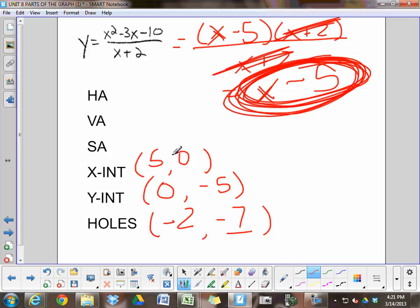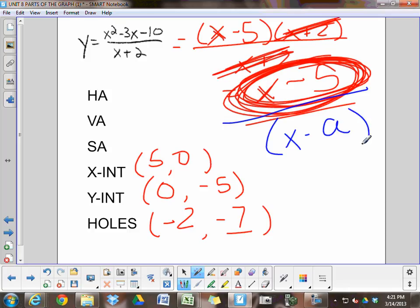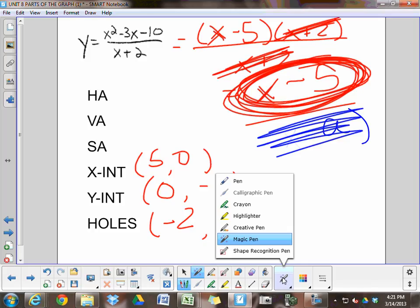Vertical asymptote. After you canceled stuff, is there any denominator left here? There's no denominator. There's no x minus something down here. If nothing is down there, there's not going to be a vertical asymptote. So you would say none.